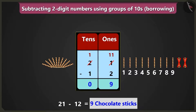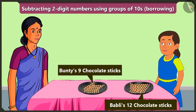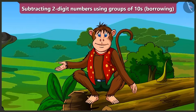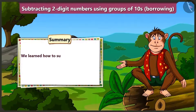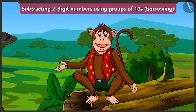Well done, Bubbly. You gave the right answer. You take your chocolate sticks and study. Friends, today we learned how to subtract two-digit numbers using groups of tens and borrowing with the help of an example. In the next video, we will learn how to subtract with the help of Bubbly's abacus without even writing.